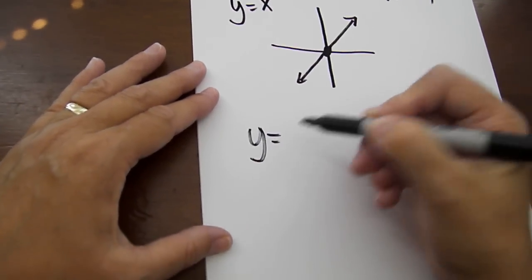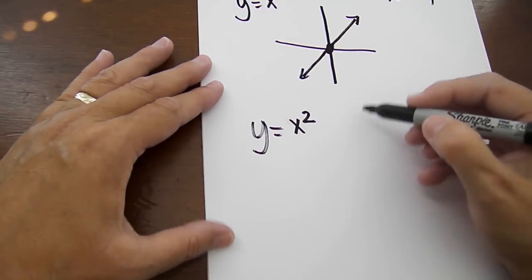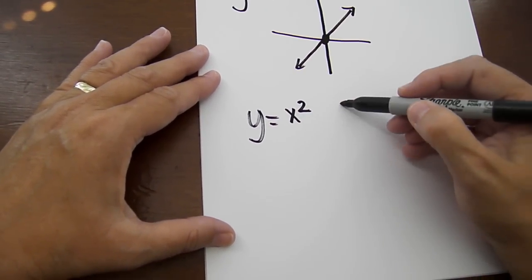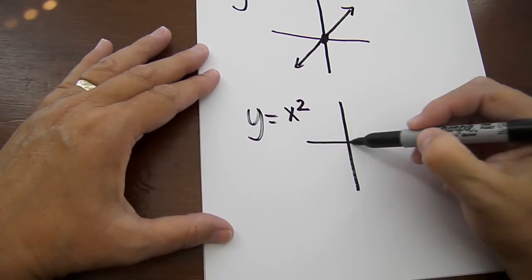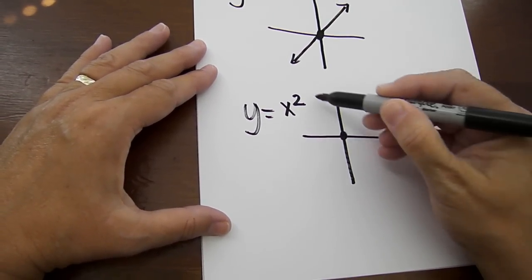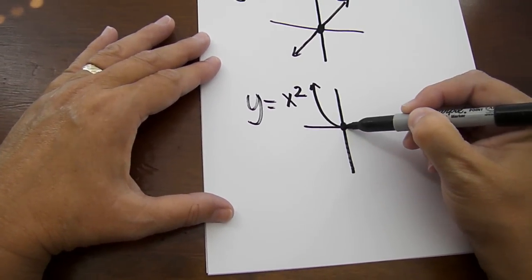The parent curve Y equals X squared. This is a linear function. This is a quadratic function. The focal point also lies at the origin.